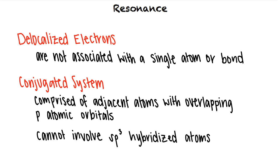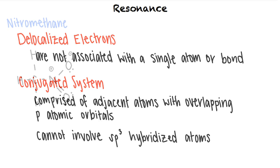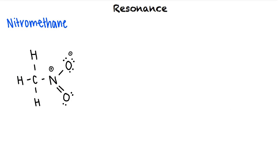For example, let's take a look at the following structure. In this structure, the carbon atom is sp-3 hybridized because it has a single bond to nitrogen and three single bonds to hydrogens. This tells us that the carbon is not included in the conjugated system.